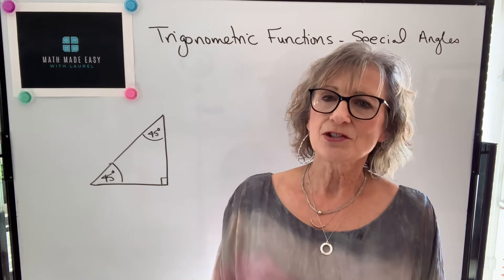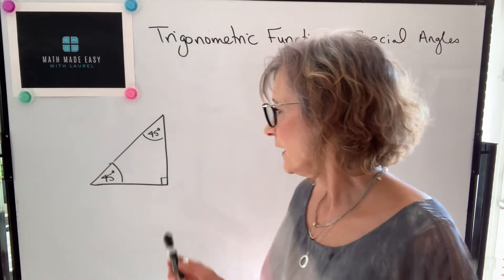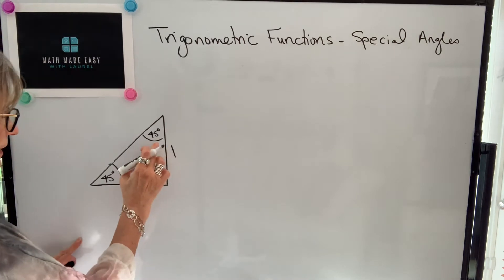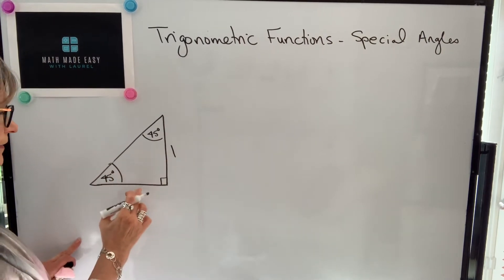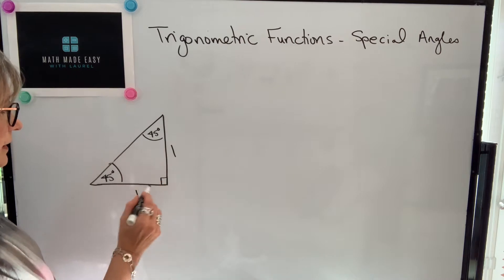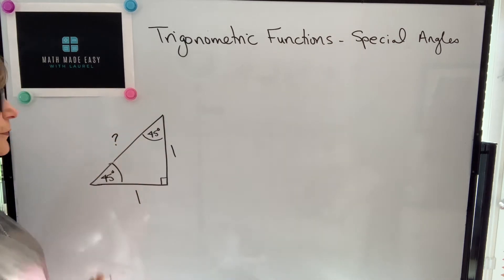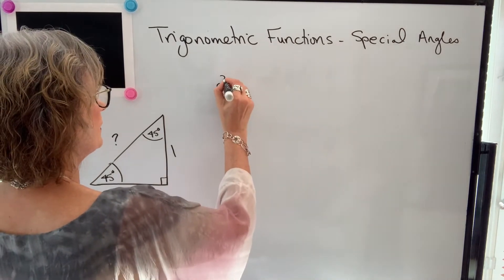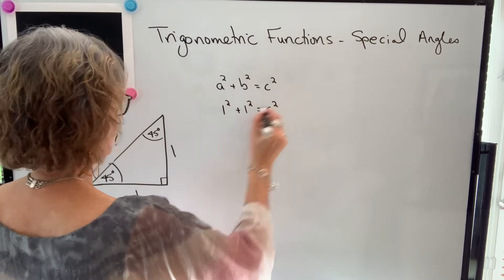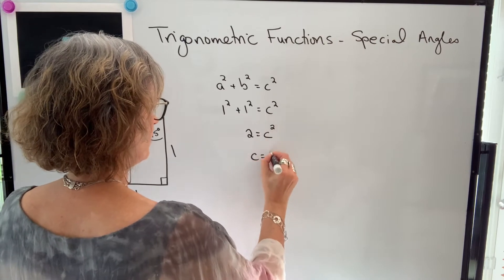First we're going to take a look at one of the special angles, which is 45 degrees, and to do that I'm going to draw a 45-45-90 degree triangle. I'm going to let one side equal one. Because both angles are 45 degrees, these two sides have to be equal — so that side also has a length of one unit. It's an isosceles right triangle. To find our hypotenuse we use the Pythagorean theorem: one squared plus one squared equals c squared, so one plus one is two, and c equals the square root of two.